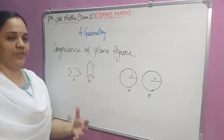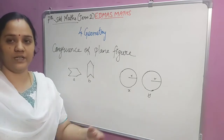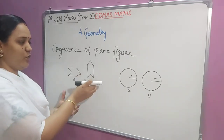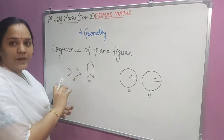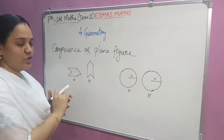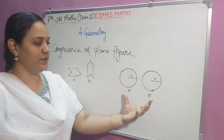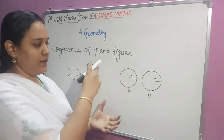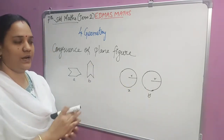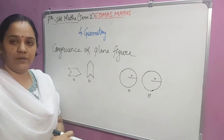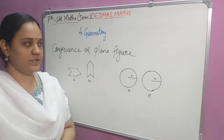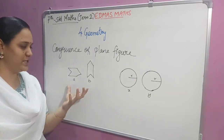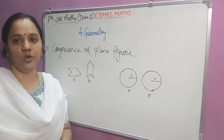Congruence of plane figures. Here you can see the plane figures — these figures are identical. If we are placing one shape over the other, they should be equal. Here also, in these two circles the radii are equal. If you are cutting this plane figure and keeping it over the other, they should be equal. So these two plane figures are congruent to each other.